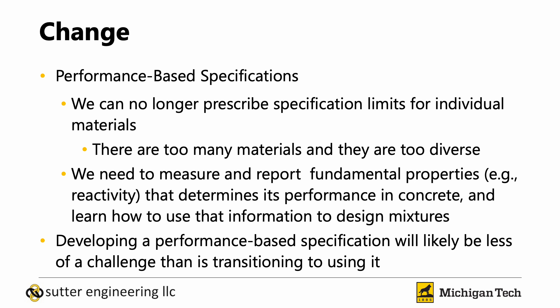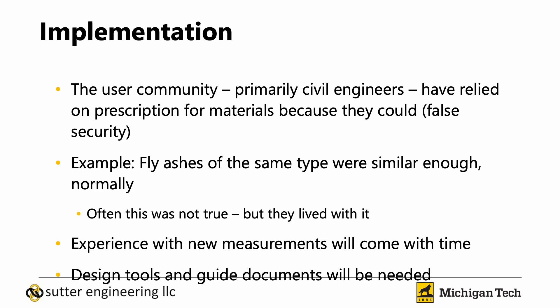As we move forward, we're going to have to adopt performance-based specifications. There are simply too many materials coming at us, and they are too diverse in terms of feedstock and process. We can no longer write prescriptive specifications for every single material. We need to measure and report fundamental properties that determine performance in concrete and learn how to use that information to design concrete mixtures. Developing a performance-based specification is likely going to be less of an issue than transitioning to using it.